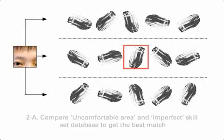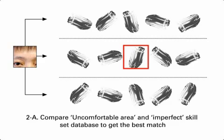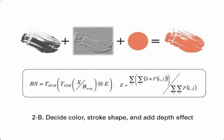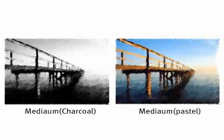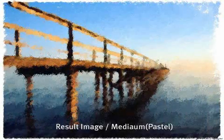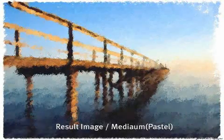A. Compare the uncomfortable area and imperfect skill set database to get the best match. B. Decide color, stroke shape, and add depth effect. The medium's characteristics also change depending on which stroke consists of the database; pigment transparency and roughness can be affected as well according to the change of color and thickness.